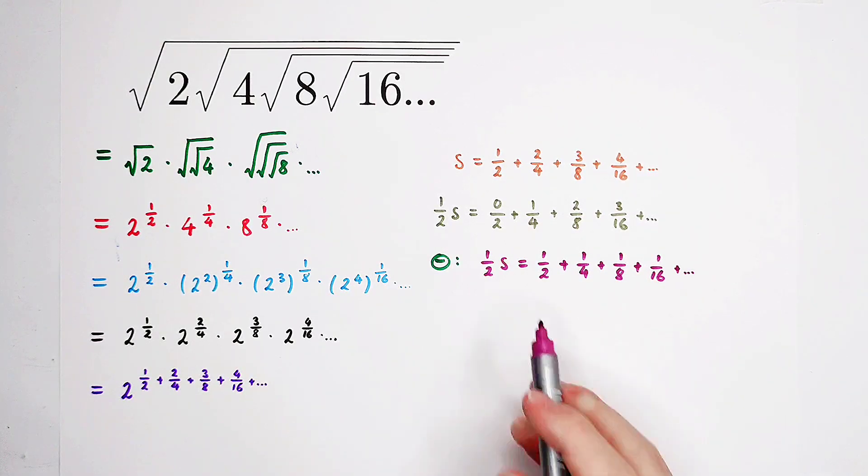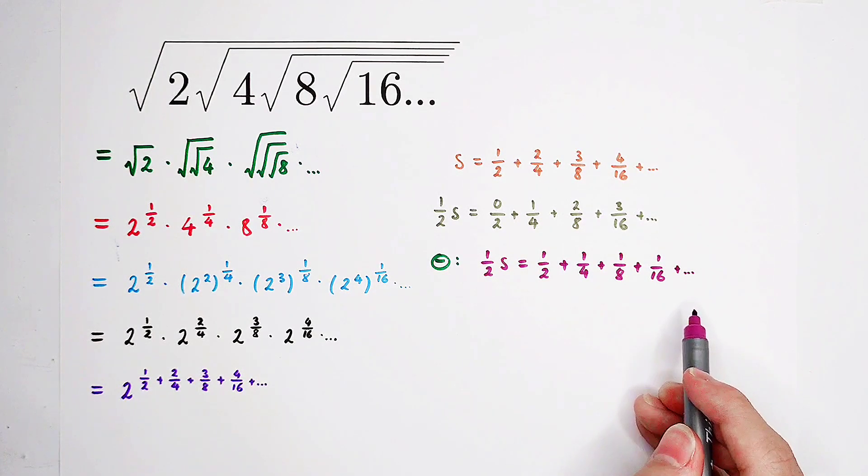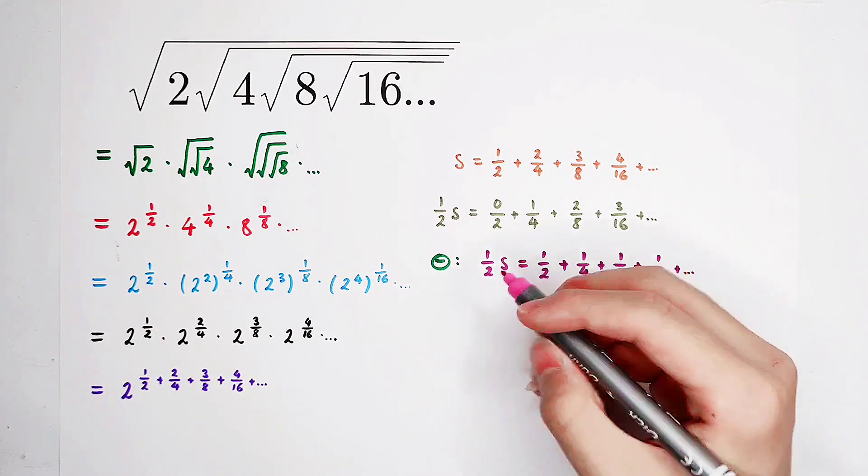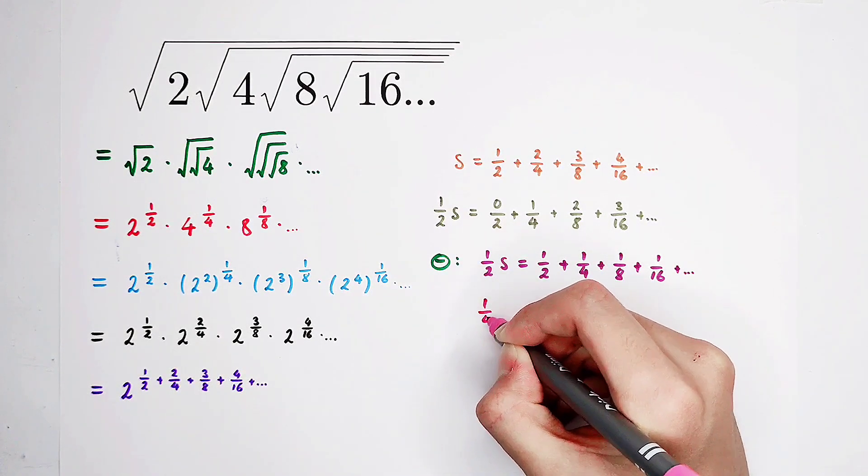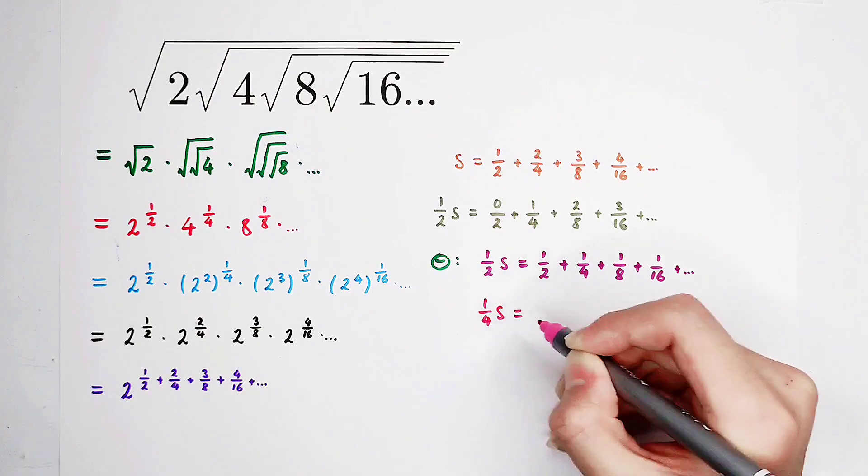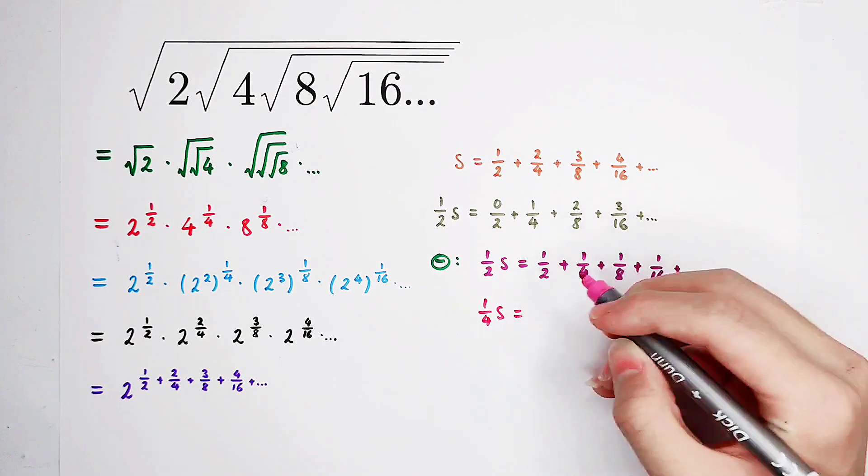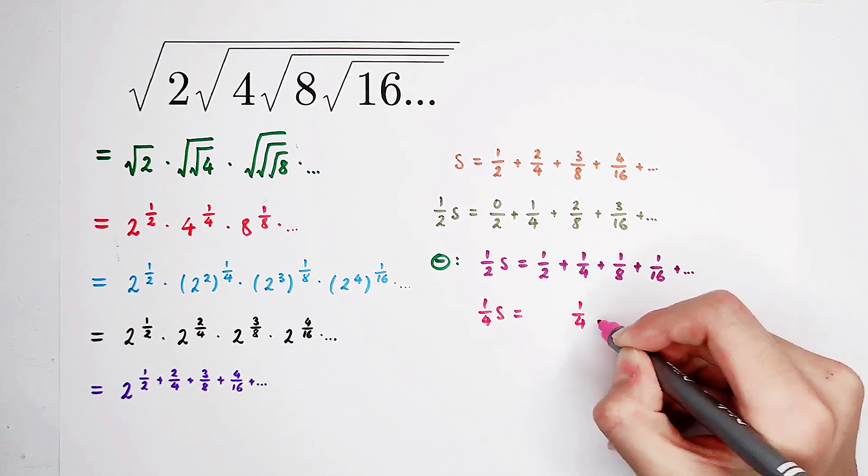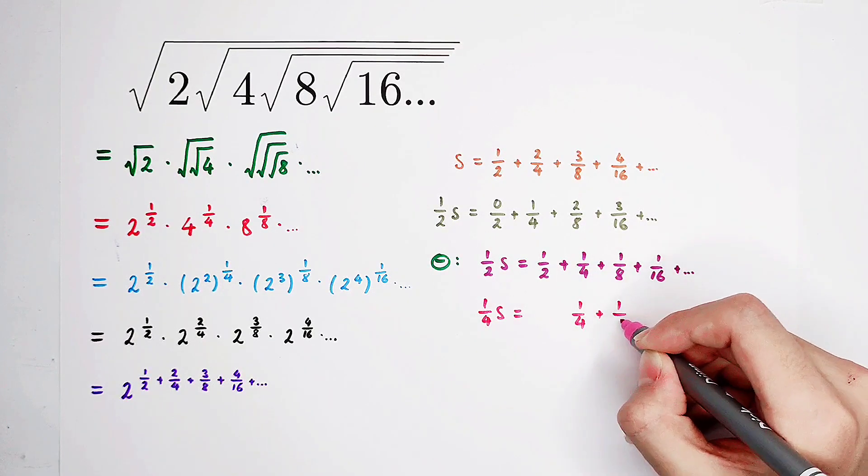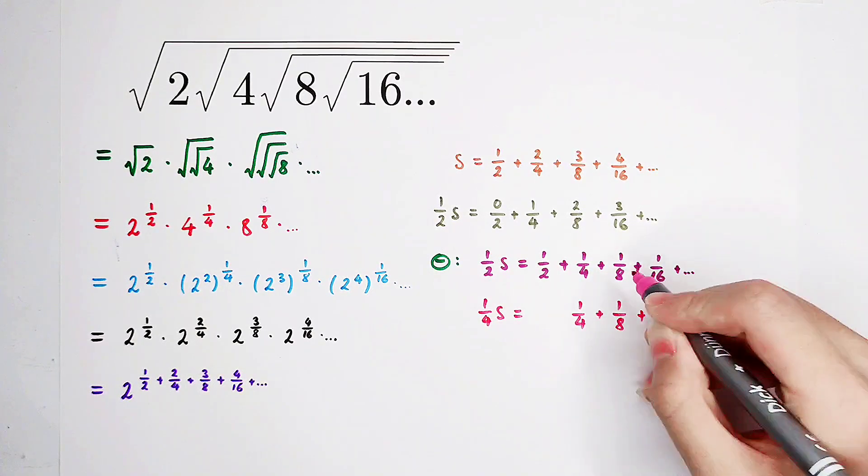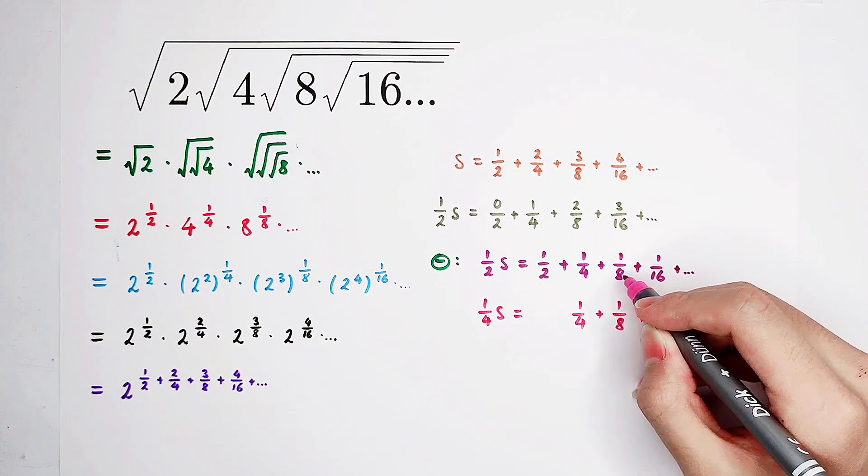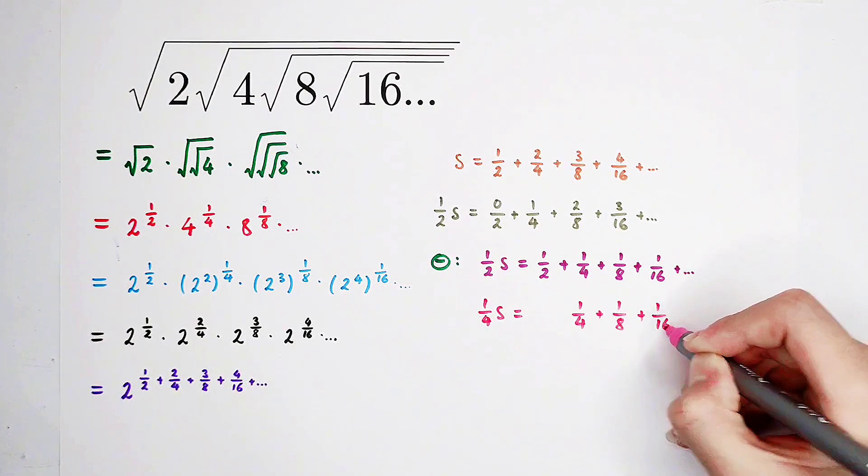What is the value of this term? We don't know. Nothing will happen. By using the same way, we can multiply a half on both sides. So it's going to be, 1 over 4 times s is equal to, 1 over 2 times 1 over 2 is 1 over 4. 1 over 2 times 1 over 4 is 1 over 8. 1 over 2 times 1 over 8 is 1 over 16, and so on.